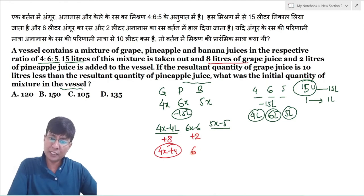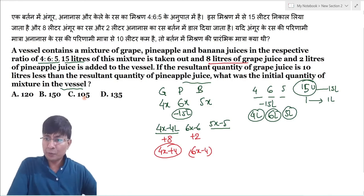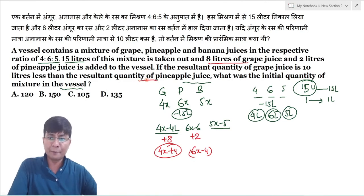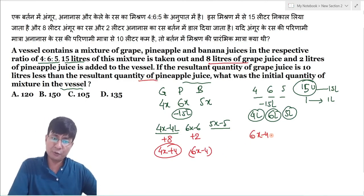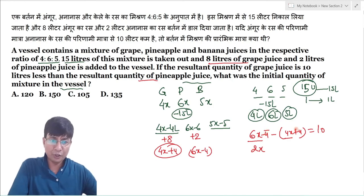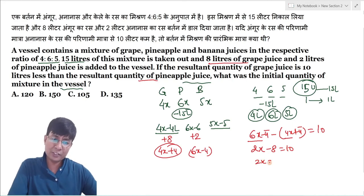इसमें आपने 2 liters of pineapple add किया है तो यह हो जाएगा 6x minus 4. यहाँ पर कह रहा है कि grape का value pineapple से 10 liter कम है — the resultant quantity of grape juice is 10 liters less than the resultant quantity of pineapple. तो simply आप लिखोगे: 6x minus 4 minus (4x plus 4) = 10. यहाँ से 2x minus 8 = 10, तो 2x = 18.